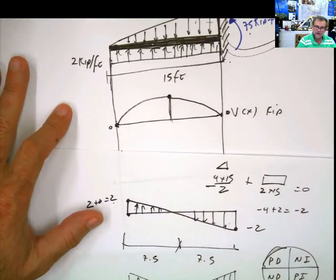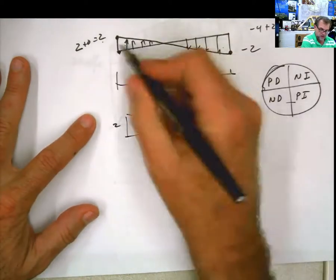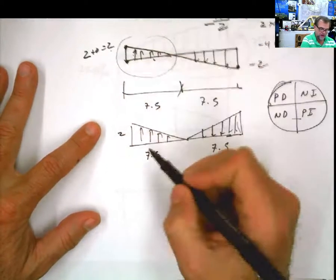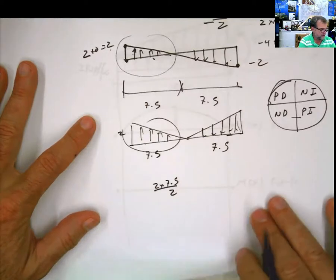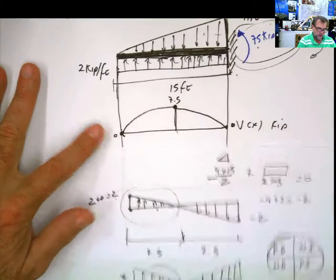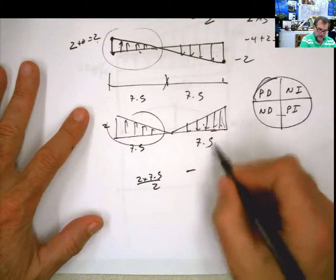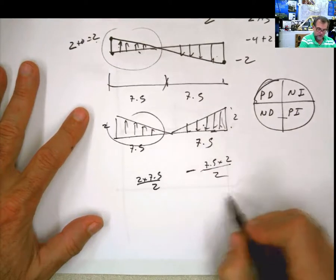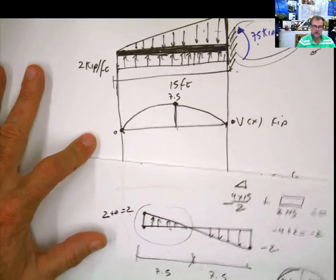You want to know the value at the midpoint? No problem. This is 7.5 and this is 7.5, and the load value here is 2. What is the area of that triangle? 2 times 7.5 divided by 2 — that's this area, and it's a positive area. That means we start from 0 and reach plus 7.5 at this point. To check: the next area is negative because arrows point down — 7.5 times 2 divided by 2 — which brings us back to 0. Shear diagram completed.